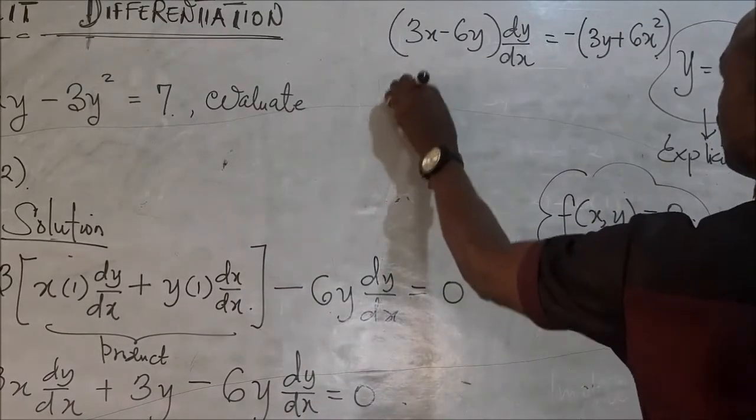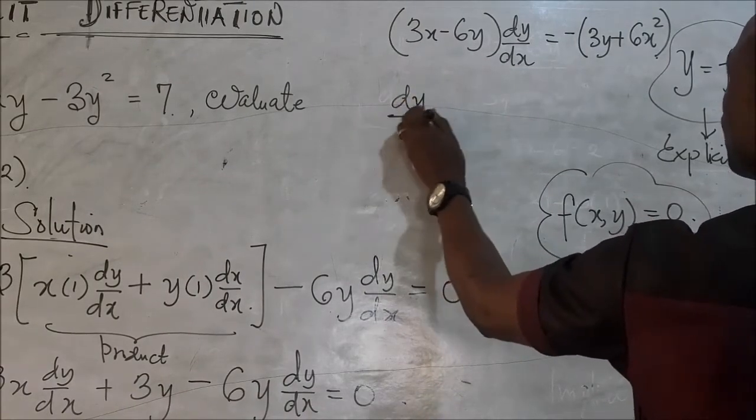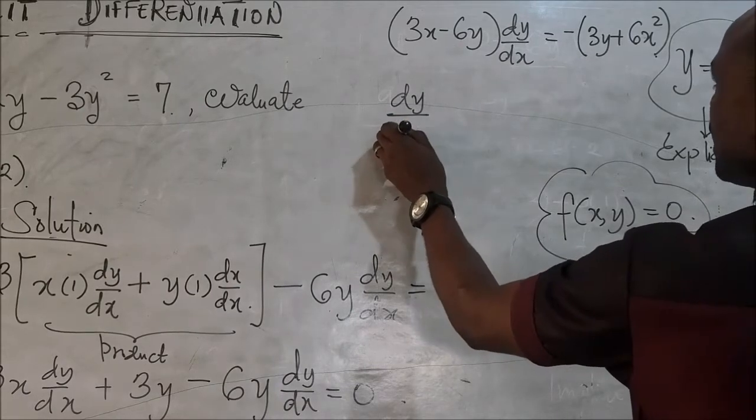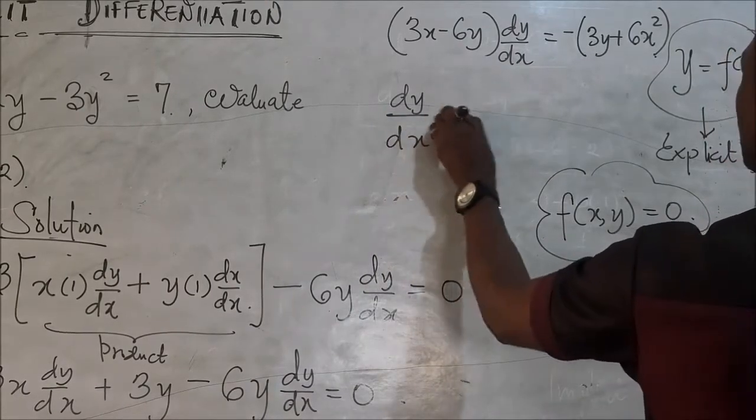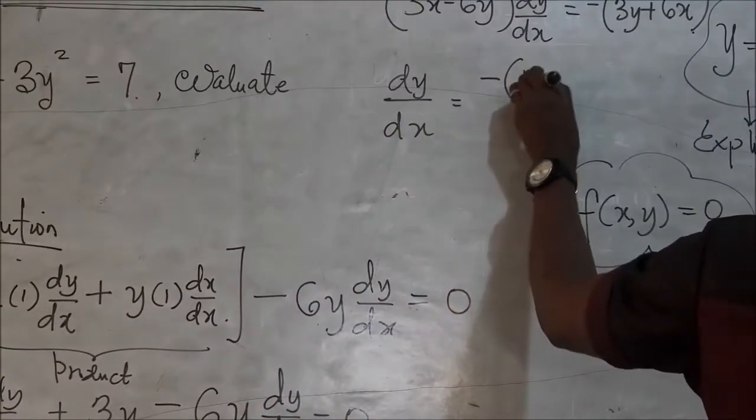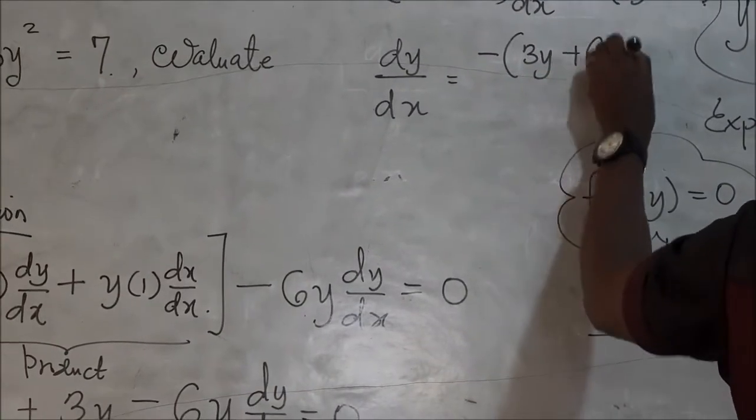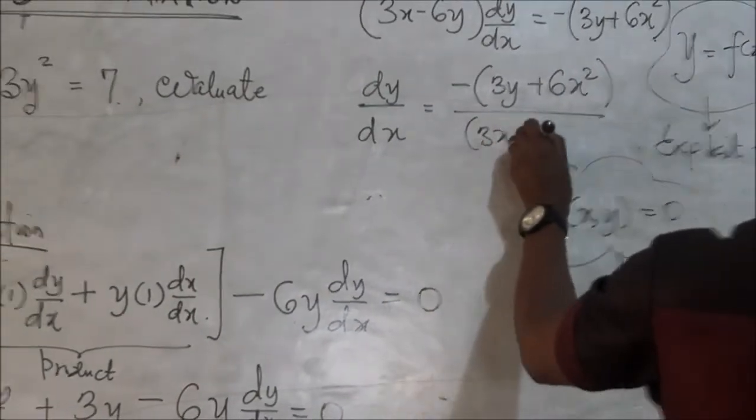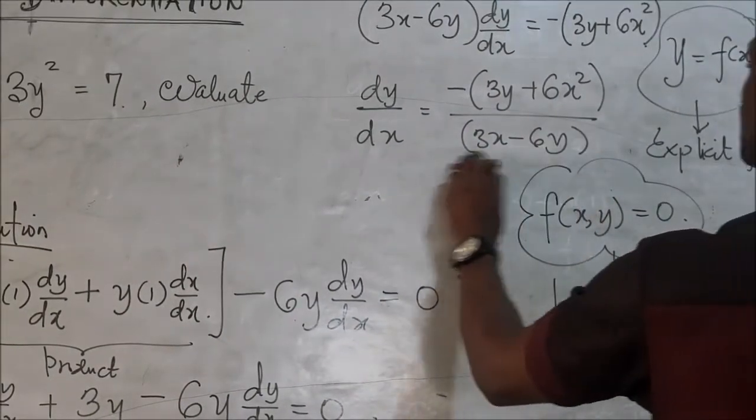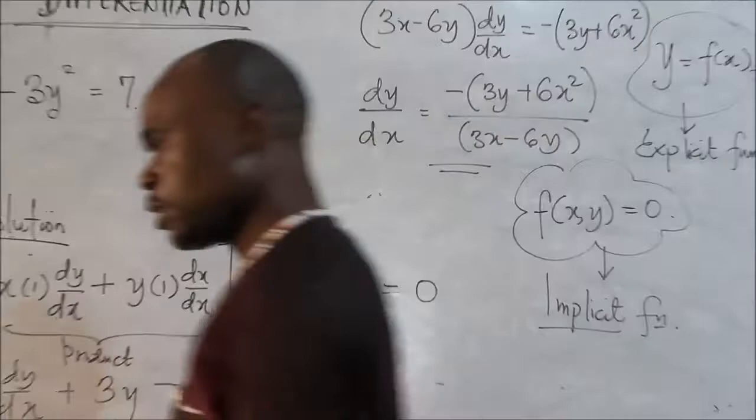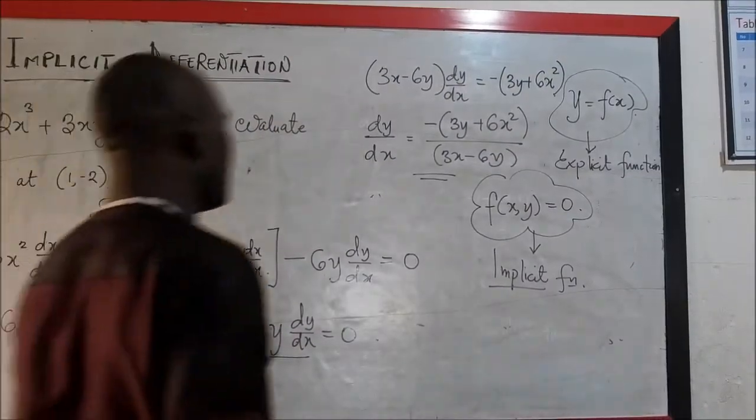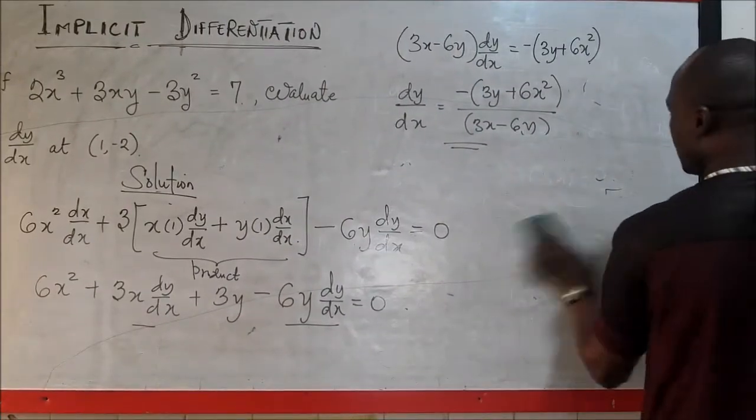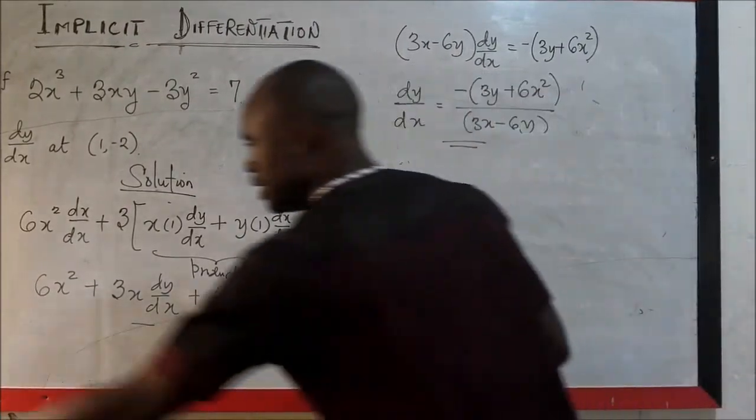So dividing both sides by this, we can have dy dx to give us minus into 3y plus 6x squared divided by 3x minus 6y. So this is actually the slope to that function or we can say the derivative to the function we have there. So this is the derivative of the function we have there.